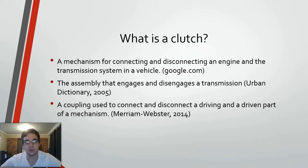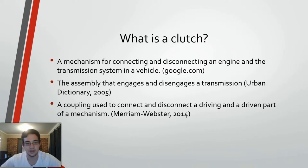So what is a clutch? According to Google definitions, it is a mechanism of connecting and disconnecting an engine and the transmission system in a vehicle. According to Urban Dictionary, it is the assembly that engages and disengages a transmission. However, in Webster's, which is probably the most accurate dictionary description, it is a coupling used to connect and disconnect a driving and driven part of a mechanism.